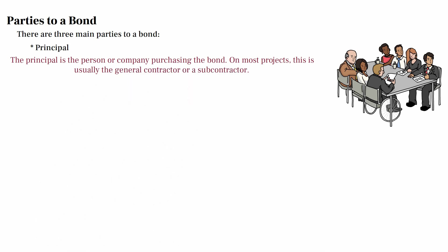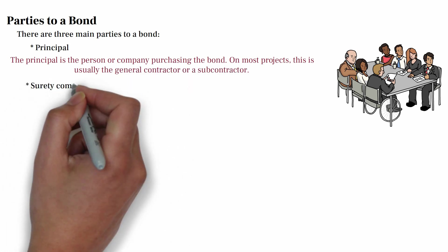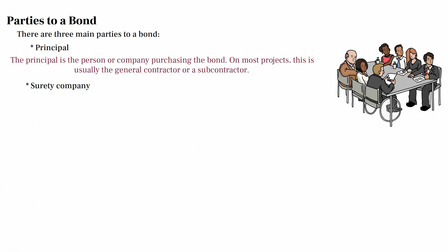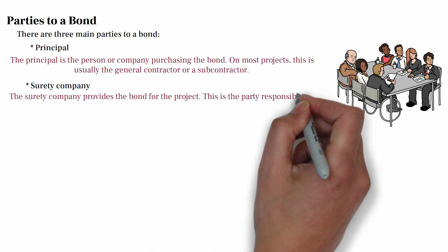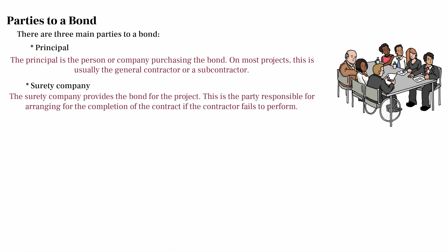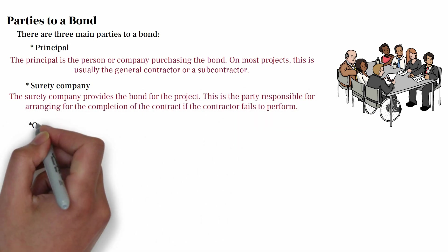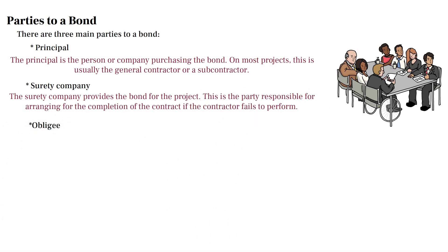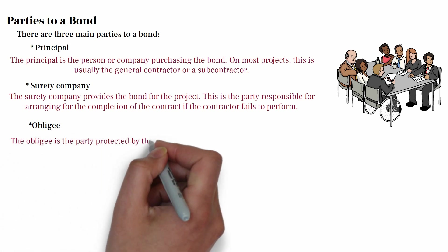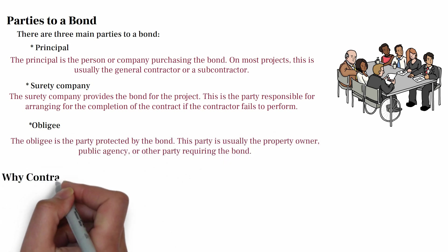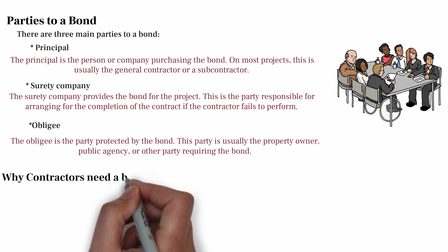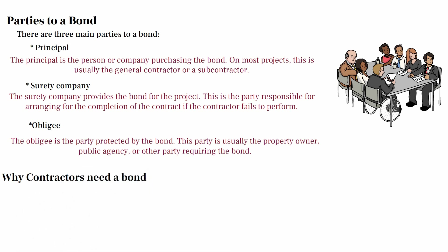The surety company provides the bond for the project. This is the party responsible for arranging for completion of the contract if the contractor fails to perform. The obligee is the party protected by the bond — usually the property owner, public agency, or other party requiring the bond.